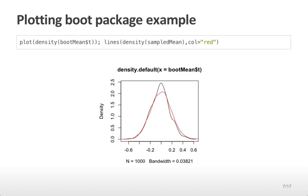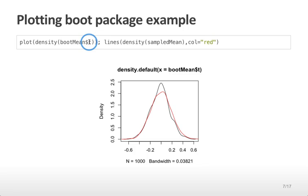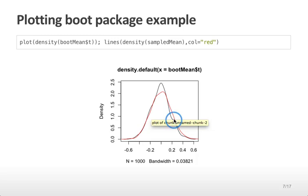We can also look at the distribution of the bootstrap data versus the distribution of the sampled data. Here I'm plotting the density of the bootstrap means in black — the bootstrap statistics get the value t in the object returned from the boot function. I can also overlay the lines from resampling 30 different values and calculating the mean every time, in red. Again, these two distributions are very similar. If I sampled a large number of values and did this for a large number of replications, these two distributions would get closer and closer together.